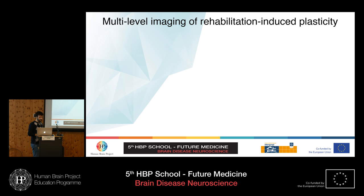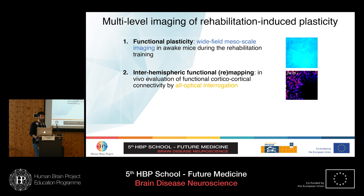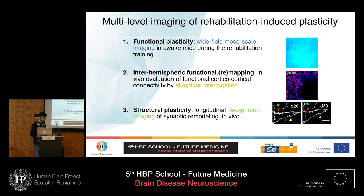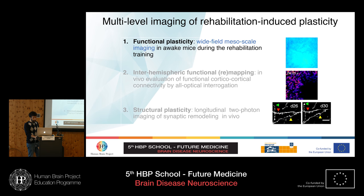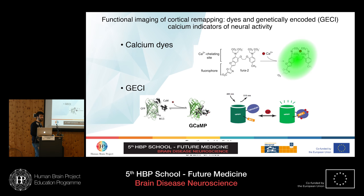With the platform and the stroke model established, we perform multi-level imaging of rehabilitation-induced plasticity. We study functional plasticity with wide-field mesoscale imaging and inter-hemispheric functional connectivity, which is important for understanding the role of transcallosal axonal projections. For structural plasticity, we use longitudinal two-photon imaging in vivo. To start, I want to introduce the importance of calcium ions: intracellular calcium concentrations are very low, but change every time a neuron activates, generating calcium transients that can be imaged using calcium dyes or genetically encoded calcium indicators.